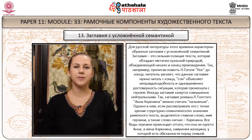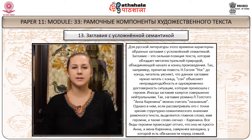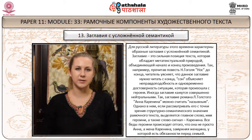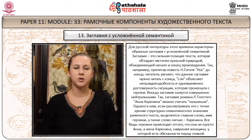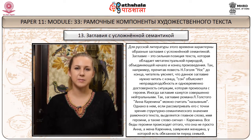Иногда заглавия кажутся совершенно нейтральными. Так, заглавие романа Толстого «Анна Каренина» можно считать назывным. Однако если рассматривать его с точки зрения структурно-семантического значения рамочного текста, выделяется главное слово – имя героини, а также слово-сигнал «Каренина». Все беды героини происходят от того, что она не просто Анна, а жена Каренина, замужняя женщина, у которой есть обязанности перед семьёй.